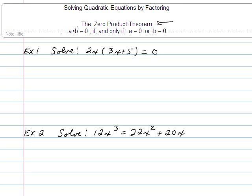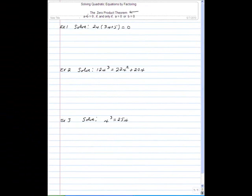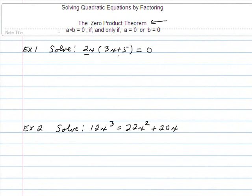Now with that in mind, let's go to our first example which says solve 2x times 3x plus 5 equals zero. Well, 2x is a number, 3x plus 5 is a number, so there's the product of two numbers that give us zero. So the zero product theorem says that either the first number 2x is zero or the second number 3x plus 5 is zero.